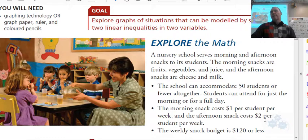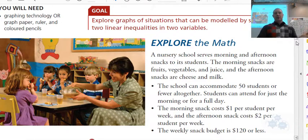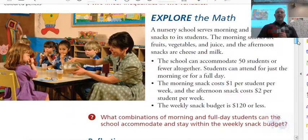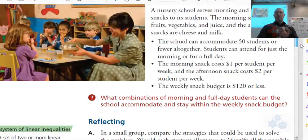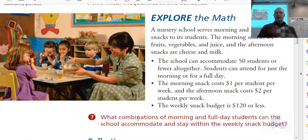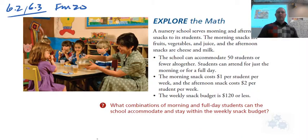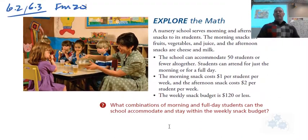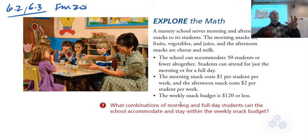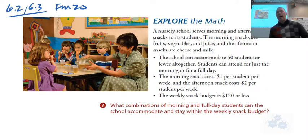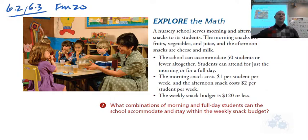So there's your second piece. This is the kind of thing you're going to need to do in transitioning from 6.2 to 6.3 — make up a system of linear inequalities. The question is: what combinations of morning and full day students can the school accommodate and stay within the weekly snack budget? And that's what we need to look at. We've already identified two inequalities. You may have been wondering, what variables am I going to use? X, Y — that's what we've normally been using. Identifying the variables is very, very important.